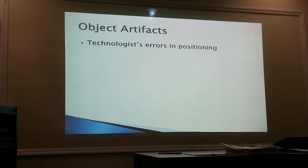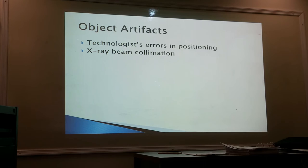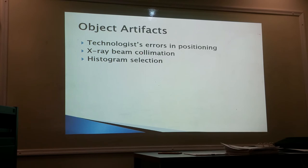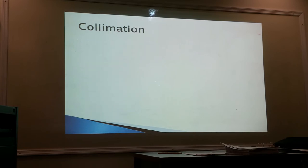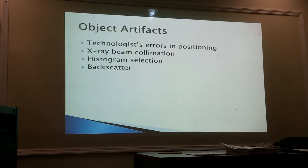Object artifacts to me represent technologist error — positioning — and that's a very broad term. This is more of what we'll be dealing with. It can be anything from collimating the beam, clipping anatomy, or selecting the wrong exam type when barcoding — for instance selecting a chest x-ray histogram when you've done an abdomen. Also backscatter can be an object artifact, happening when you shoot across the table and the beam bounces back from the wall.